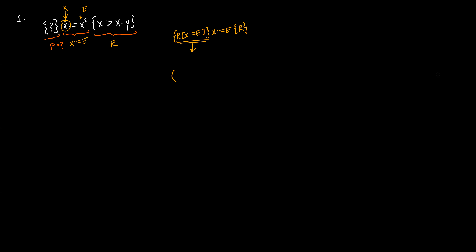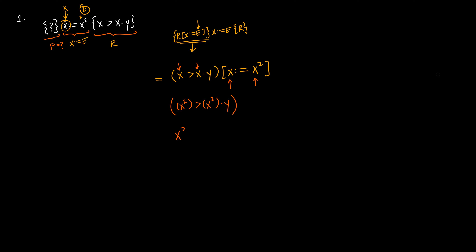To calculate the precondition, we take R which is x > x*y and perform the textual substitution replacing all occurrences of x with x². We have two occurrences of x, so replacing both gives us x² > x²*y. Removing unnecessary parentheses, we get x² > x²*y. This is a valid precondition for the given Hoare triple.